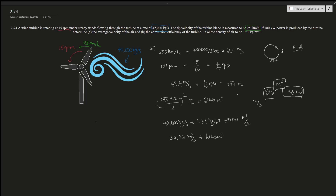This is the part that requires you to think backwards: area times a distance gives volume, and volume times density gives kilograms — times velocity squared over two gives joules, or kg per second gives power. Dividing 32,061 m³/s by the area of 6,140 m² gives us the velocity: approximately 5.228 meters per second. That is the average velocity of the air.